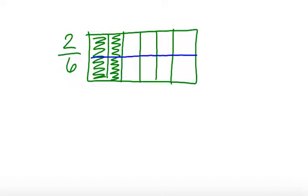Now I have 12 pieces, and 4 are shaded. So that tells me that 2 sixths is equivalent to 4 twelfths.